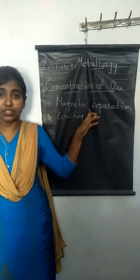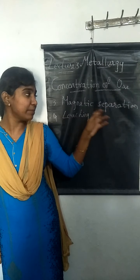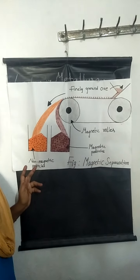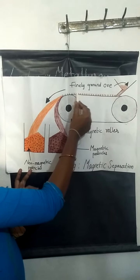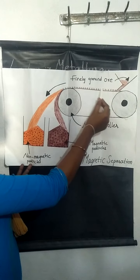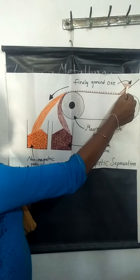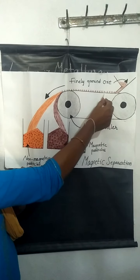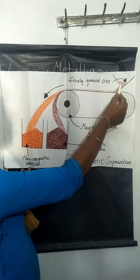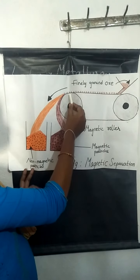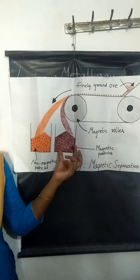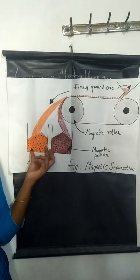Looking at the schematic diagram of magnetic separation will help us understand the process clearly. In the diagram, there is a conveyor belt passing through magnetic rollers — the two magnetic rollers support the conveyor belt. Finely ground ore is placed onto the conveyor belt, and as it moves, the powdered ore travels along and reaches the magnetic rollers. We assume the ore particles are magnetic in nature and the gangue particles are non-magnetic.